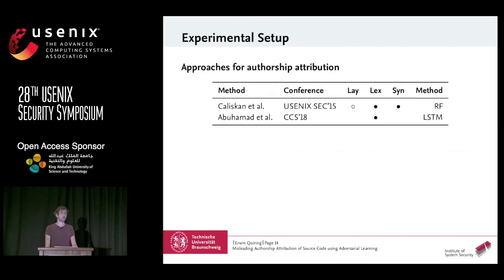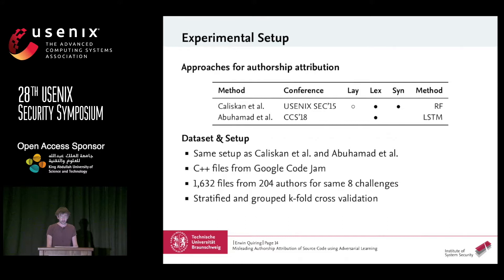To evaluate our attack, we consider two state-of-the-art methods: Kaliskan et al., which uses a random forest with layout, lexical, and syntactic features (though we exclude layout features as they would make our attack even easier), and Abu Hamad et al., which uses lexical features and a recurrent neural network — specifically an LSTM. We use C++ files from the Google Code Jam, where authors solve the same problems, so we learn coding style rather than problem-solving. Our dataset consists of 204 authors who solved the same eight challenges, with a stratified grouped K-fold cross-validation using seven challenges for training and one for testing.